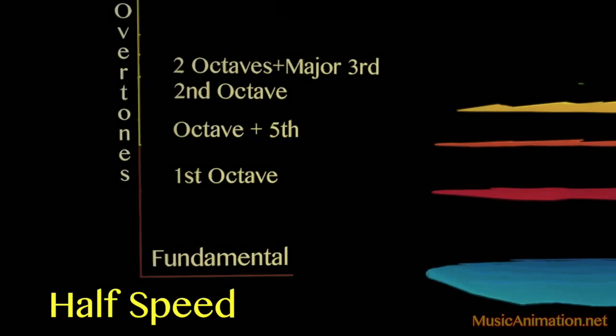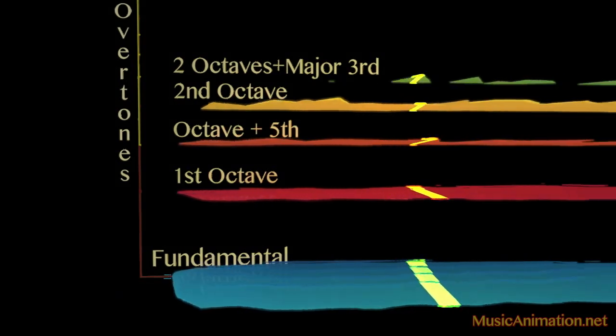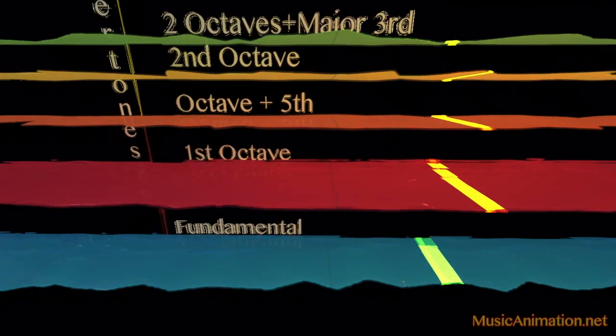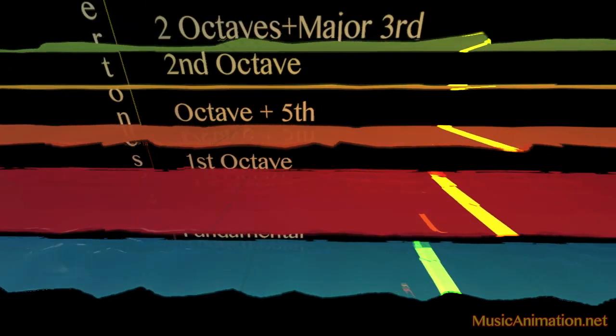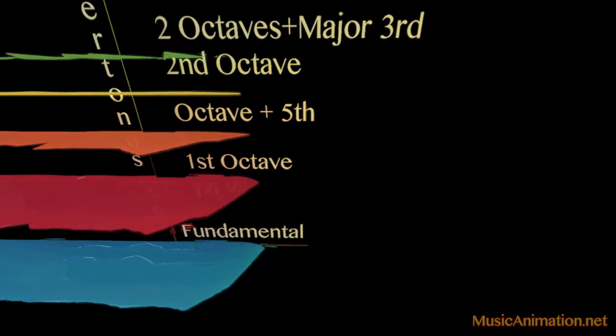Here it is at half speed. See the changing patterns in the fundamental and harmonics as a single note is blown on the flute. These constantly changing patterns create a much more interesting and evolving sound than the regular pattern of an electronic instrument.